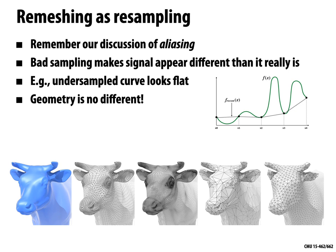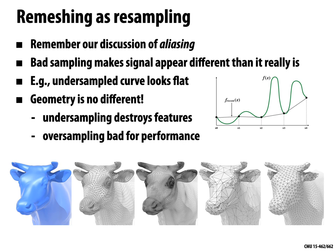Geometry is no different. Even if we put points exactly on the surface and get individual coordinates exactly right, under-sampling can destroy features. On the flip side, over-sampling is bad for performance — using a ton of memory and processing power without getting valuable results. It's a balancing act to sample signals at the right fidelity for our task.